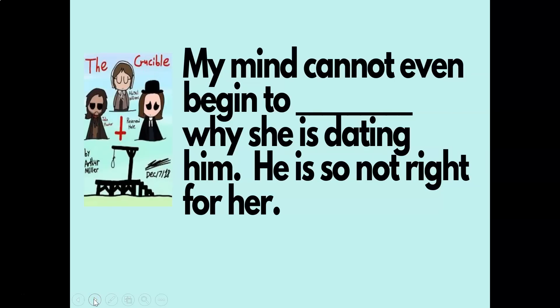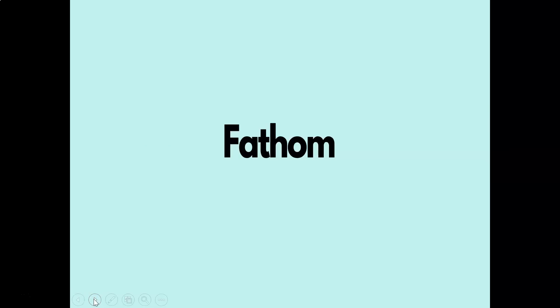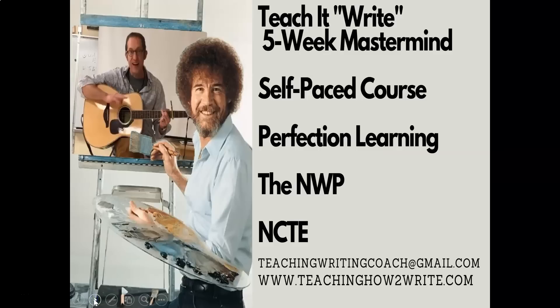One last example: 'My mind cannot even begin to blank why she's dating him — he's so not right for her.' Students might say 'speculate,' 'fathom,' or 'rationalize.' The word from The Crucible was 'fathom.' So that's just one way I do vocabulary — you can get through all 40 words like that pretty quickly.